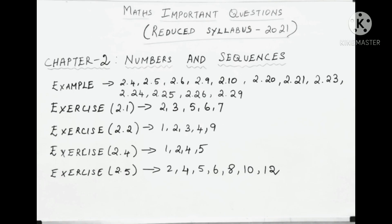Example 2.4, 2.5, 2.6, 2.9, 2.10, then 2.20, 2.21, 2.23, 2.24, 2.25, 2.26 and 2.29. This is the example sums. And exercise 2.1: 2, 3, 5, 6 and 7.